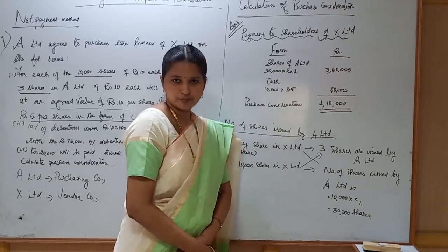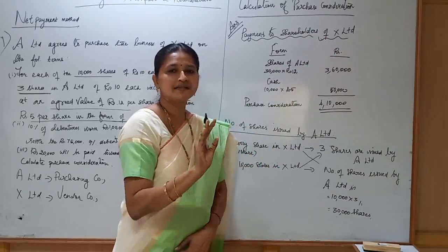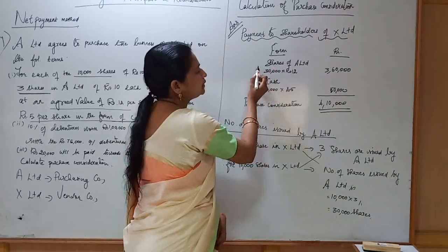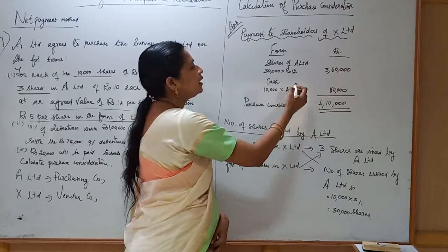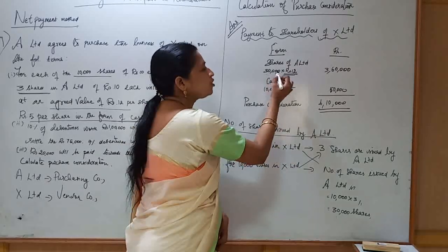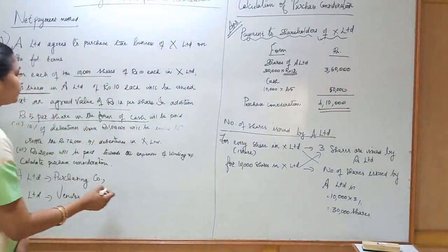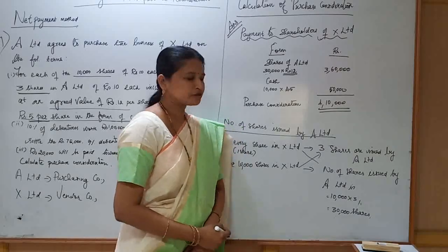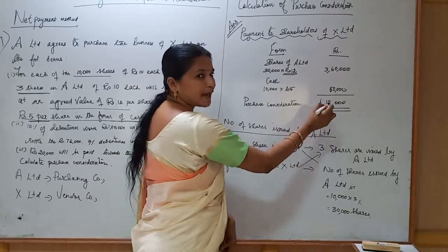Now come to the solution. Calculation of purchase consideration — payment to shareholders of X Limited only. First, payment in the form of shares: 30,000 shares issued by the purchasing company at an agreed value of rupees 12. Always take only the agreed value. So 30,000 × rupees 12 = rupees 3,60,000. Second, payment in the form of cash at rupees 5 per share, and number of shares in X Limited is 10,000. So 10,000 × rupees 5 = rupees 50,000. Therefore, purchase consideration = rupees 4,10,000.